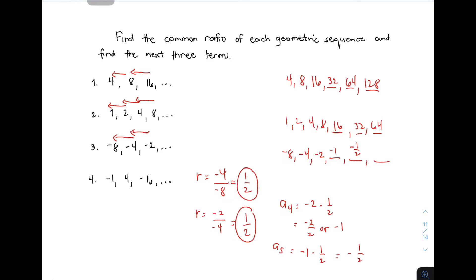Now for the sixth term a_6, multiply -1/2 by 1/2. This gives -1/4. The sixth term is -1/4.